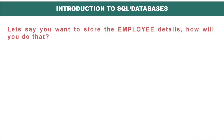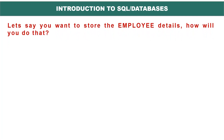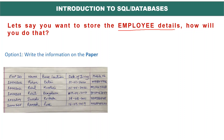First of all, let's say you want to store the employee details. You have employees in your organization and you want to store all the details of your employees. So how will you do that? First option can be to write the information on paper — employee ID, name of the employee, base location, date of joining, and mobile number. Tomorrow there is a new employee, you can write here as well and maintain the records in a register.